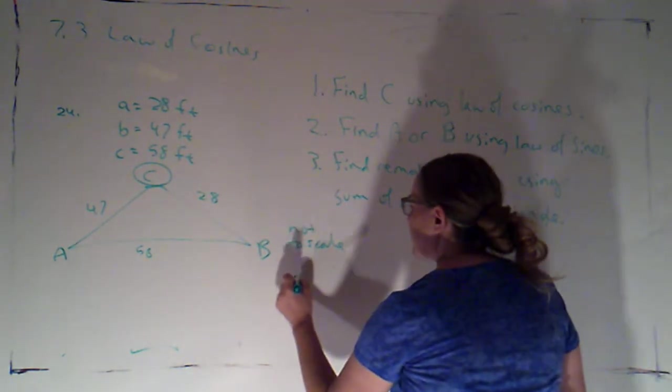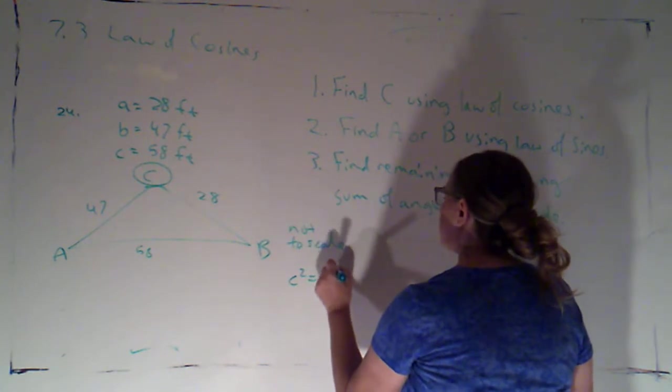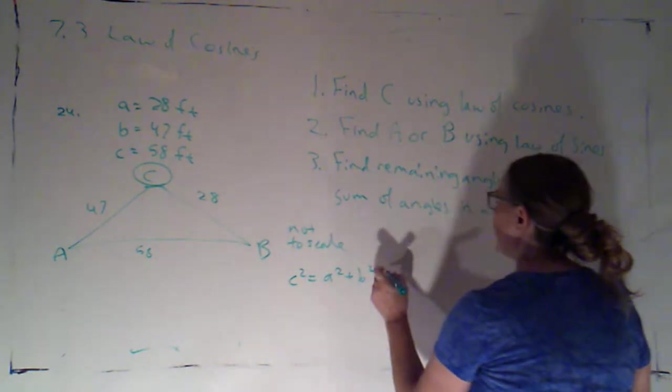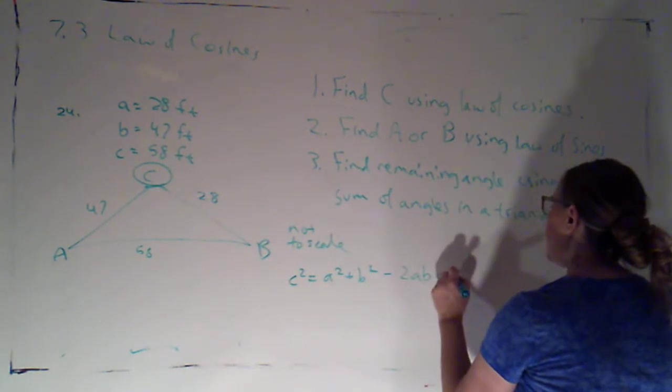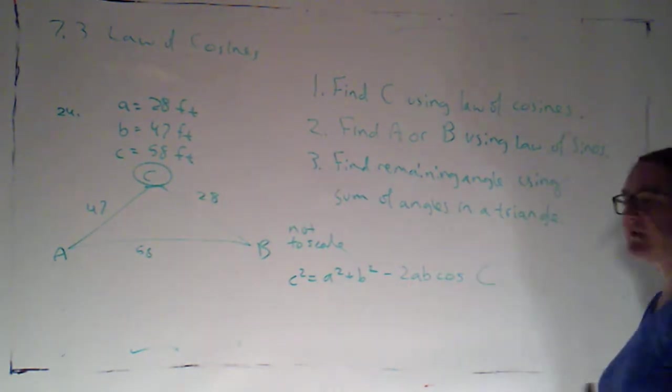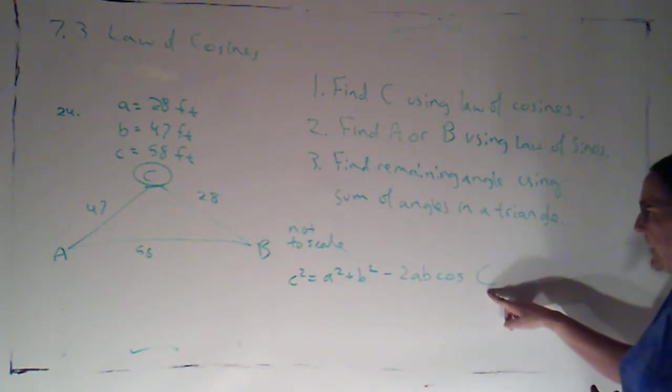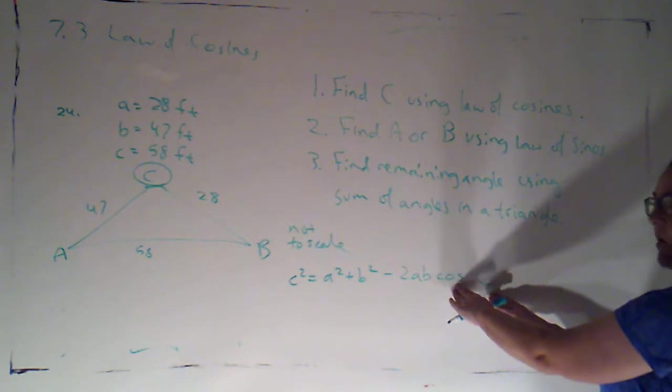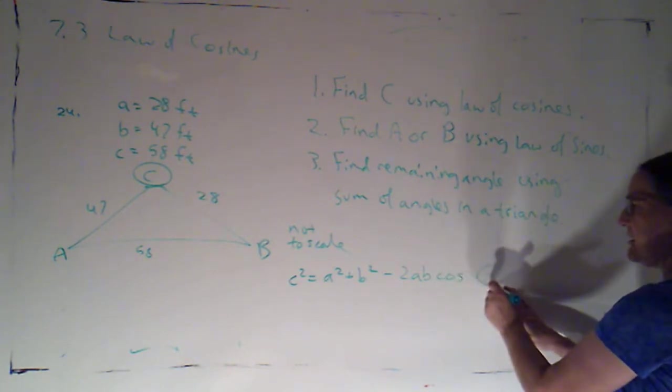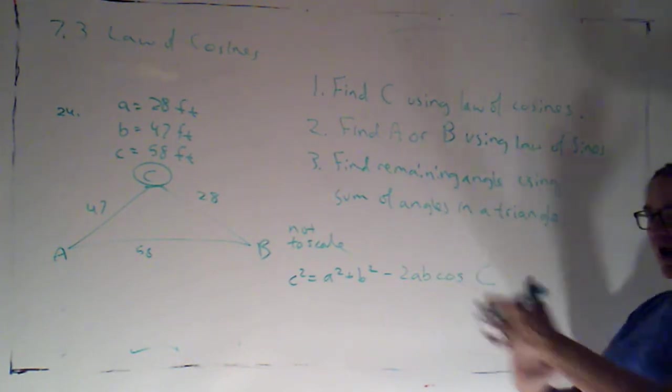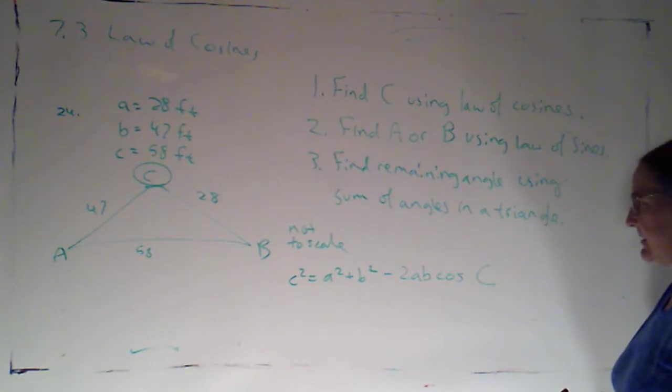So if I look at the law of cosines, it's C squared equals A squared plus B squared minus 2AB times cosine of C. I think what I'm going to do is I'm going to solve this for cosine of C before I plug anything in.